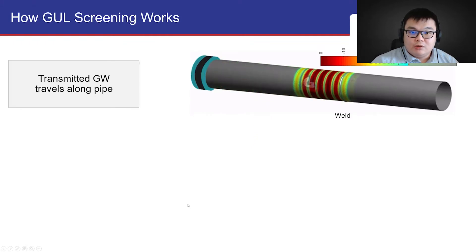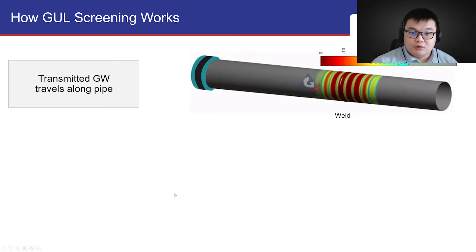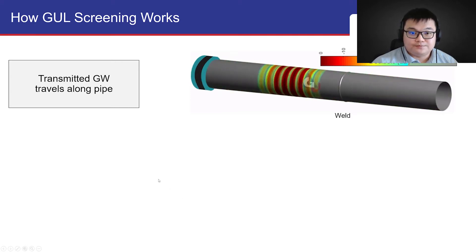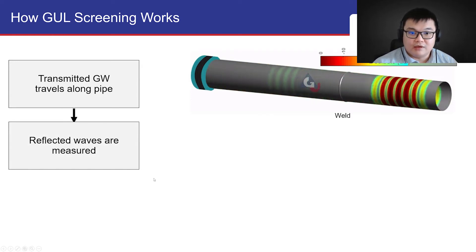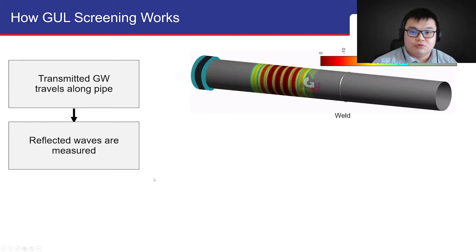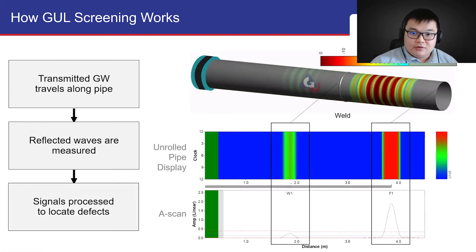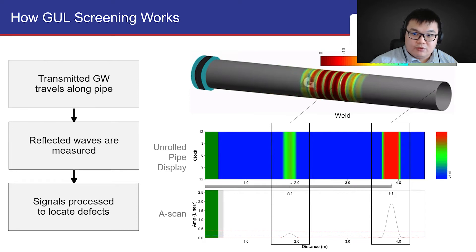GUL screening works by using a transducer ring to transmit GuidedWaves along the pipe axially. These GuidedWaves will then interact with existing pipe features or defects, and the reflected GuidedWaves are measured by the transducer ring. These GuidedWave signals are then processed by the WavePro software to produce two main results.